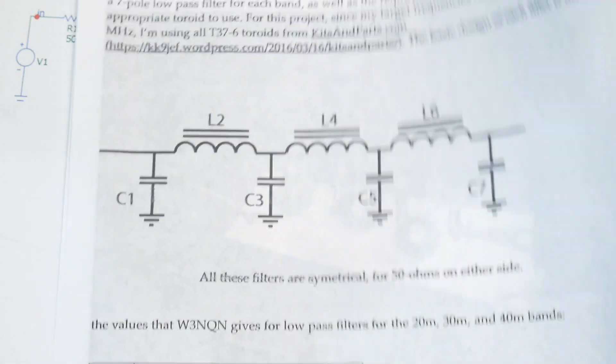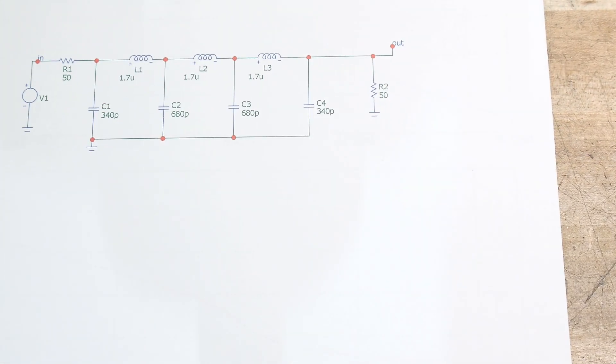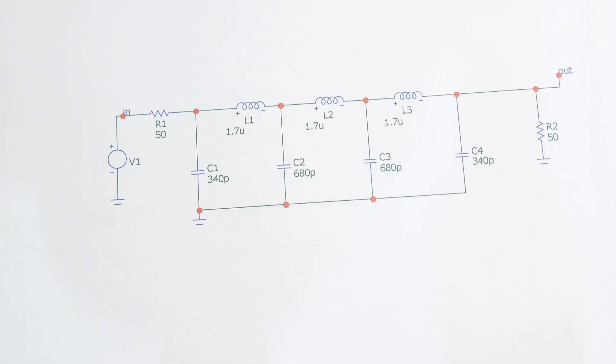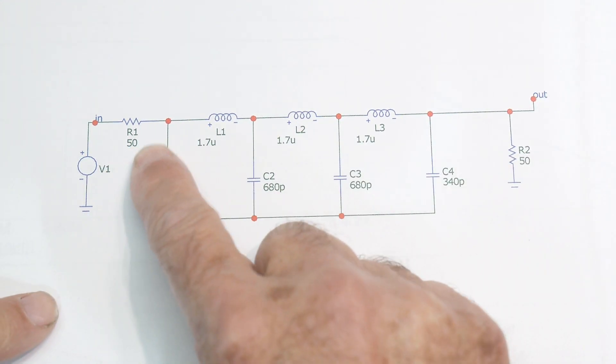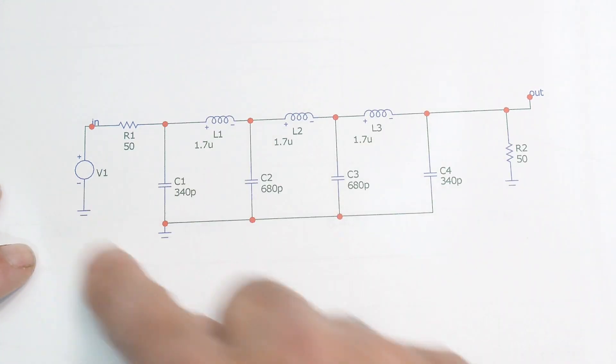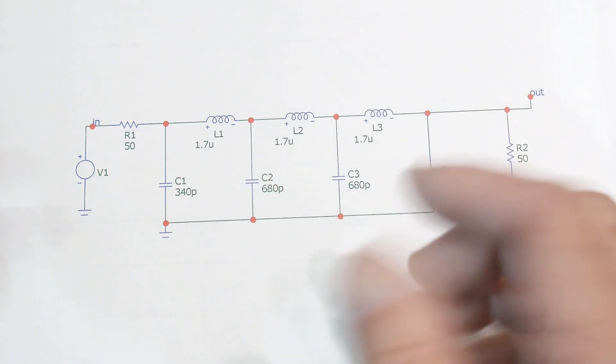I went ahead and made a SPICE model. If you're going to build a SPICE model, it's really important that you get the impedances right because this thing is very dependent on the impedances. It's designed for 50 ohms in, 50 ohms out.